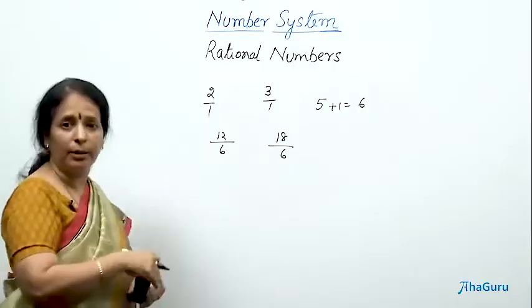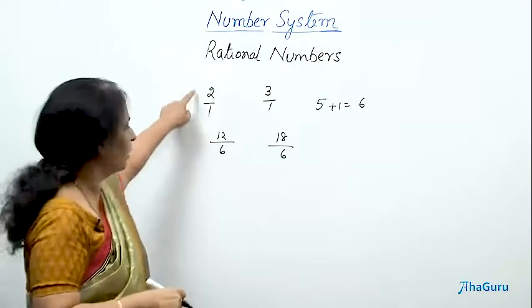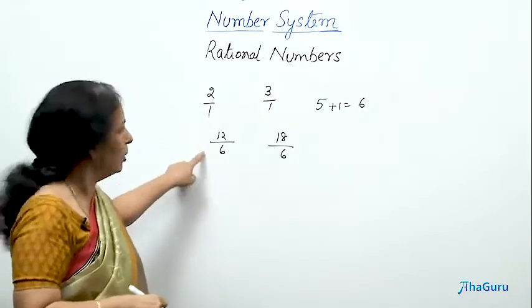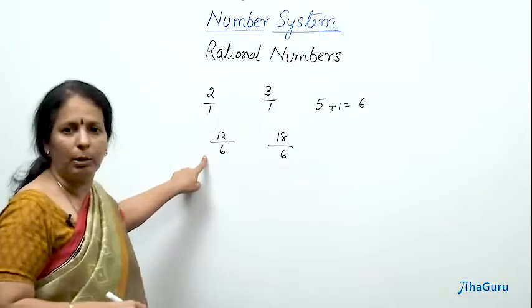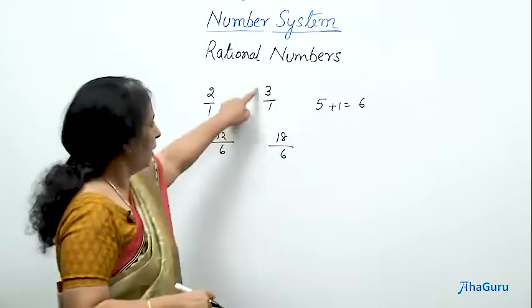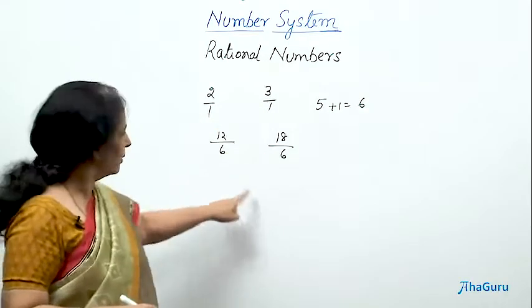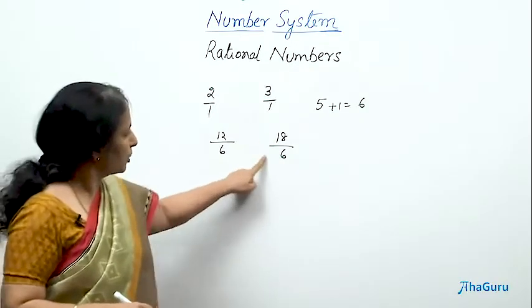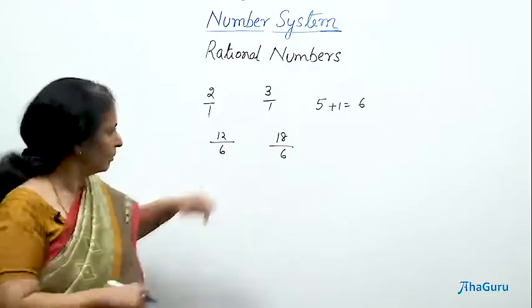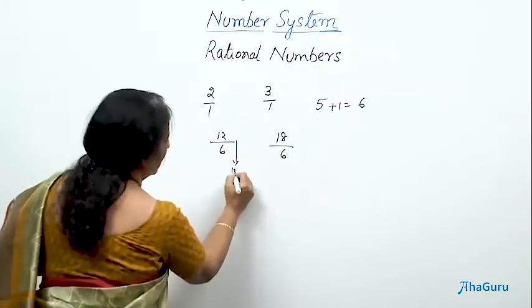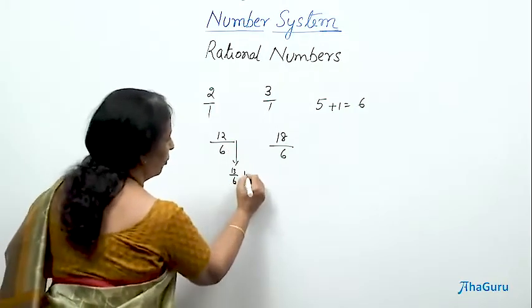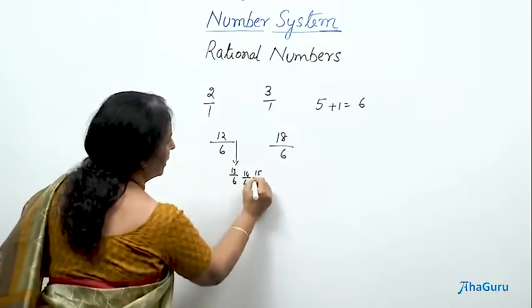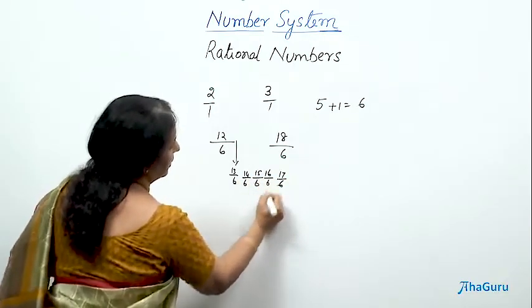This number and this number is the same thing, isn't it? They are equivalent fractions as they call it. So, the values are same. So, instead of 2 by 1, I can surely write 12 by 6, nobody can stop me. Similarly, 3 by 1 is same as 18 by 6. These two are also rational numbers. Because how many rational numbers can you just by looking at it find? Something here, 13 by 6, another one, 14 by 6, then 15 by 6, 16 by 6 and 17 by 6.